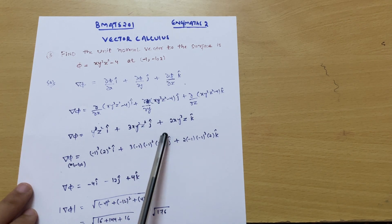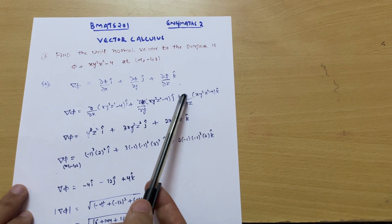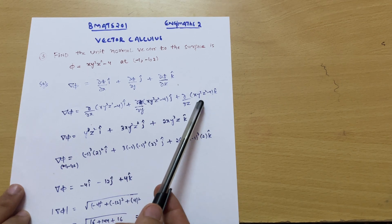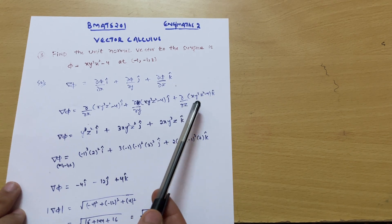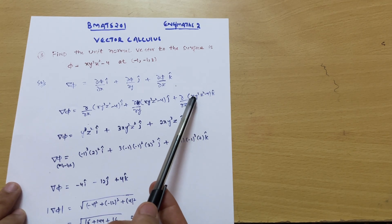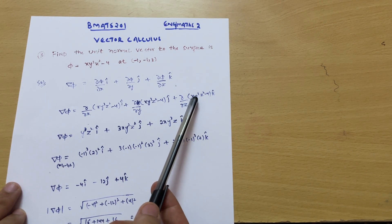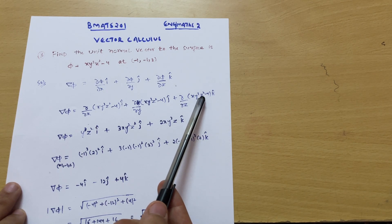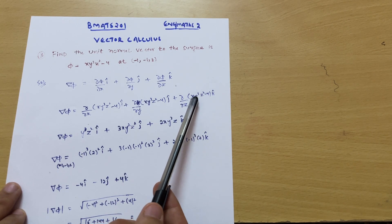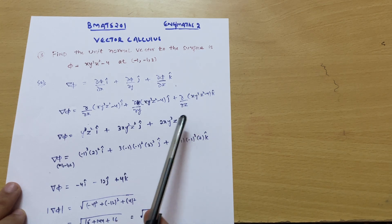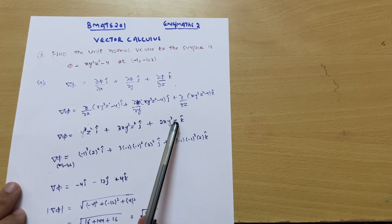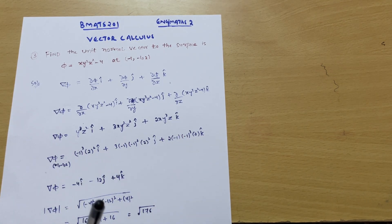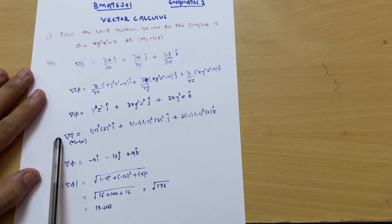For the z-component, we differentiate the z term with respect to z; x y³ remains constant. The differentiation of z² is 2z. So we get 2z k-cap. I hope you are following — this is basic differentiation.